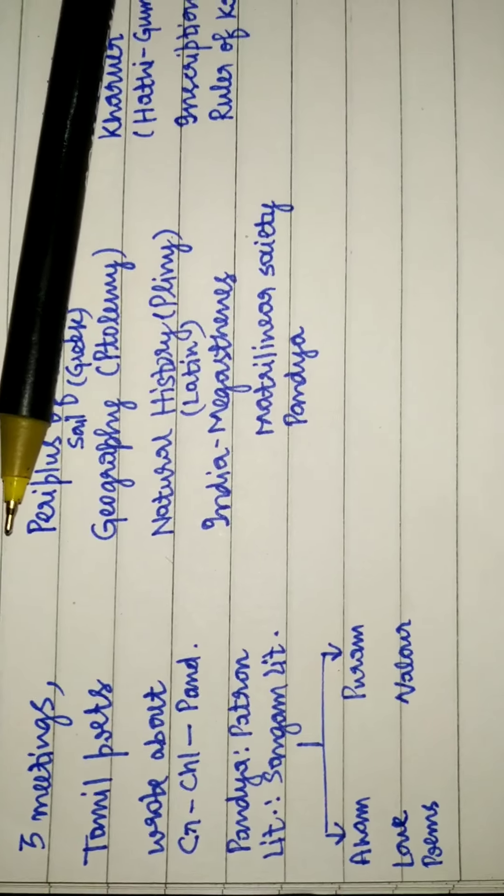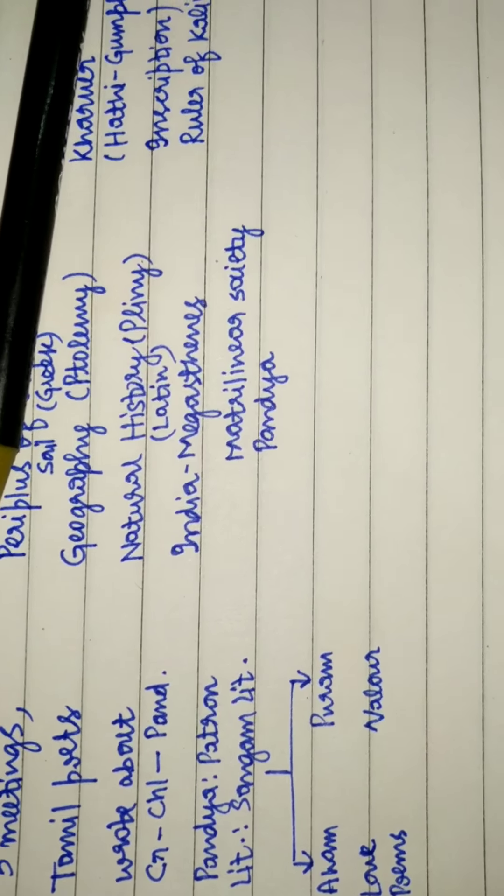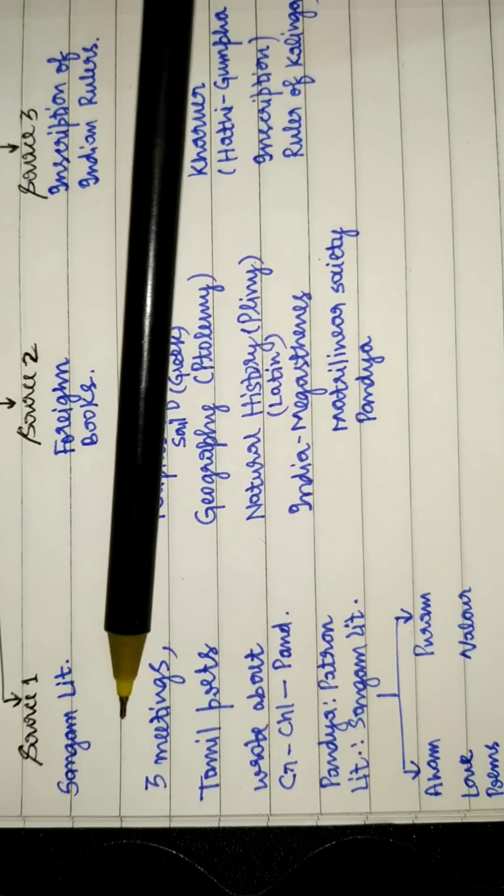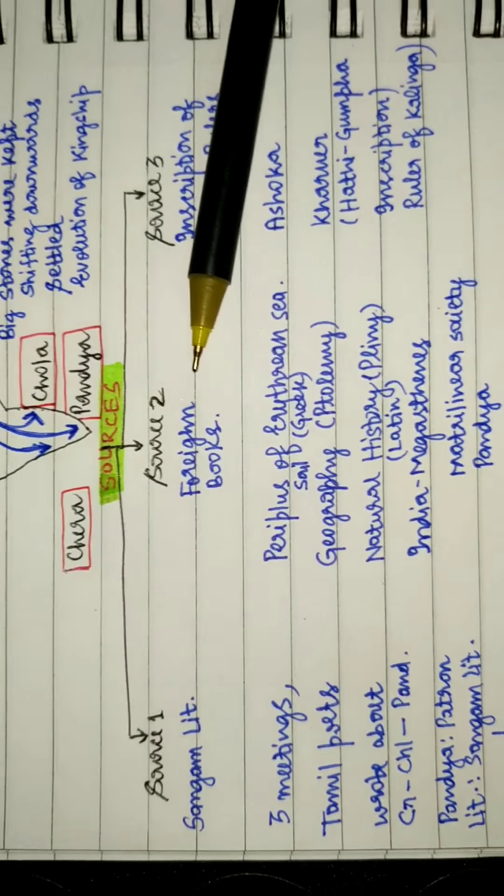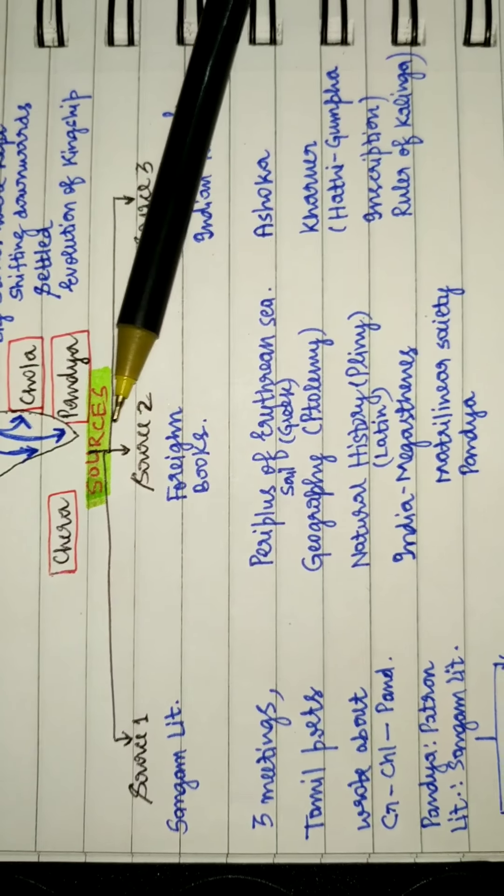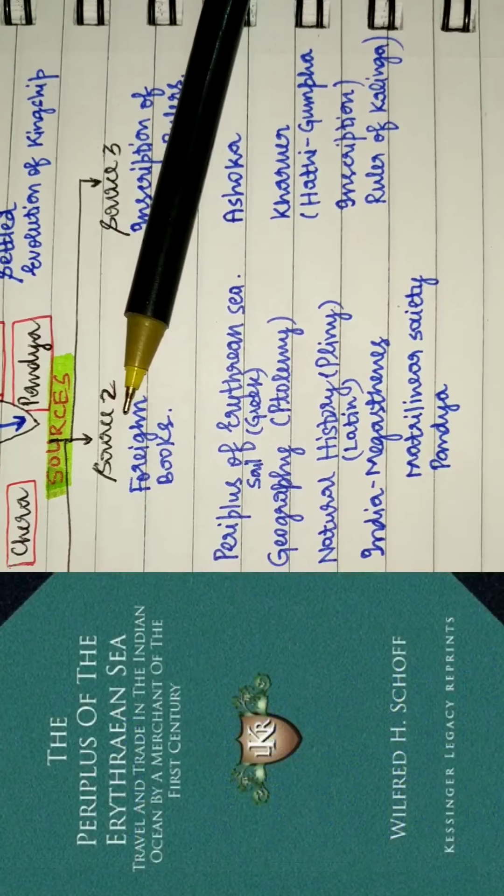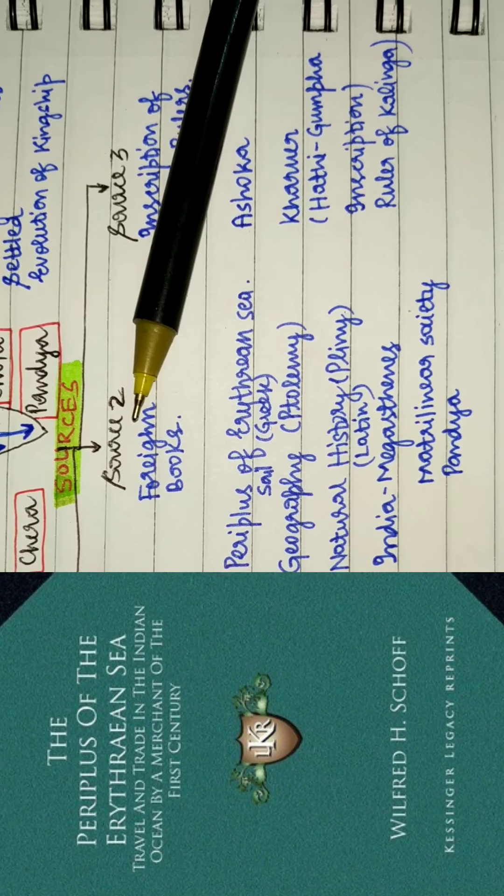Source one is complete. Let's move to source two. The source two is the foreign books, books like Periplus of the Erythraean Sea.